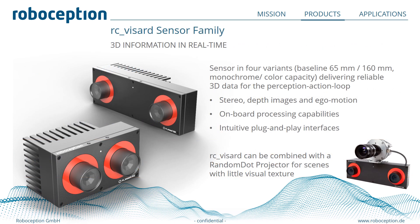The RC Wizard is a 3D stereo-based depth sensor. It comes in two baselines: 65mm and 160mm. On top of the stereo data, it also provides ego-motion, meaning the pose of the sensor with respect to its environment. The RC Wizard has onboard processing capabilities and intuitive plug-and-play interfaces. In scenes with little or no visual texture, the RC Wizard can be combined with a random dot projector, which does not need to be calibrated to the sensor — it is only time-synchronized so you can access data with and without the pattern.